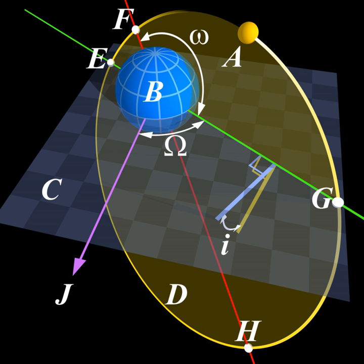The Hohmann transfer takes less than half of the time because there is just one transfer half ellipse, to be precise, t equals π times A to the 3/2 over the square root of ν.